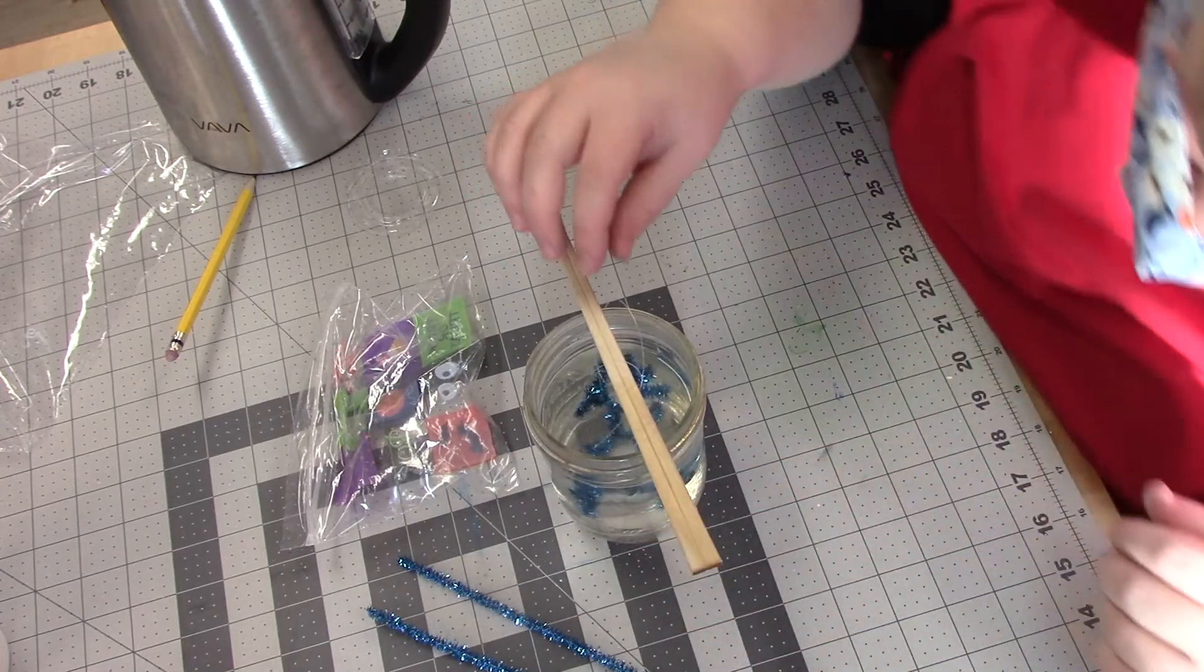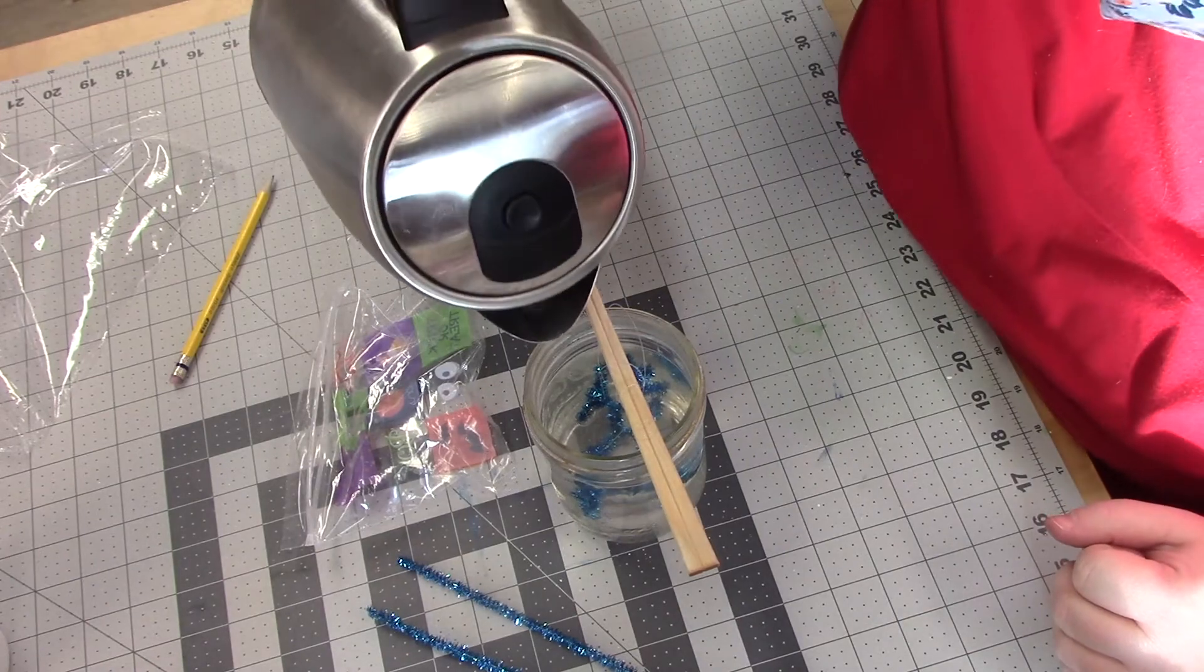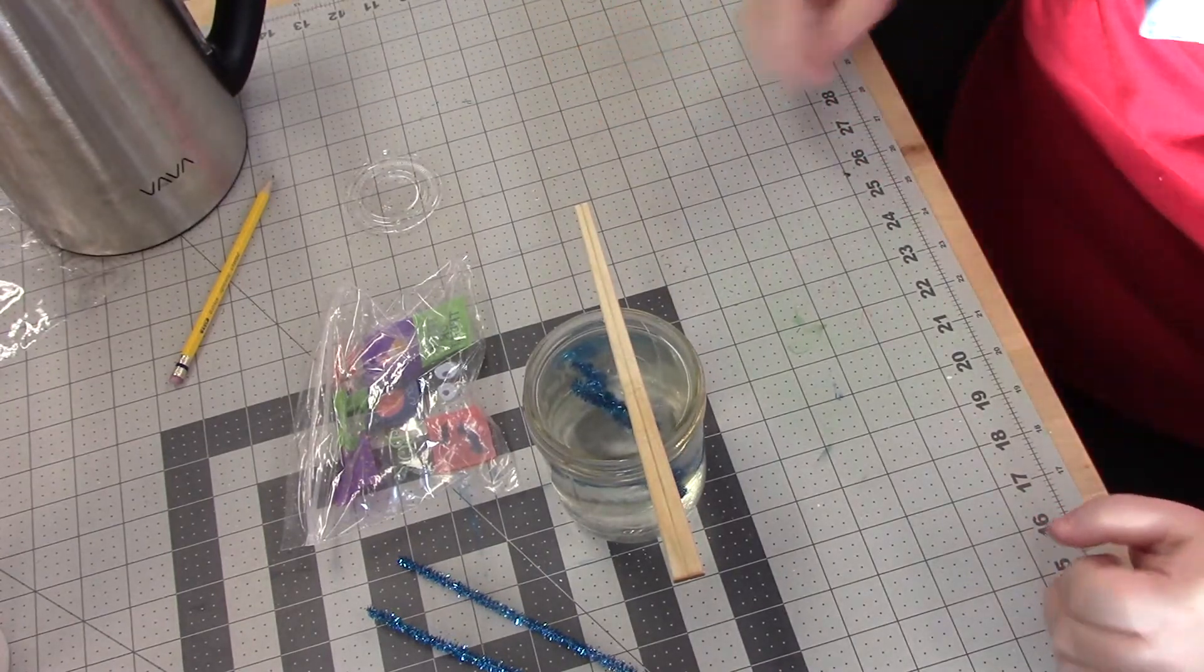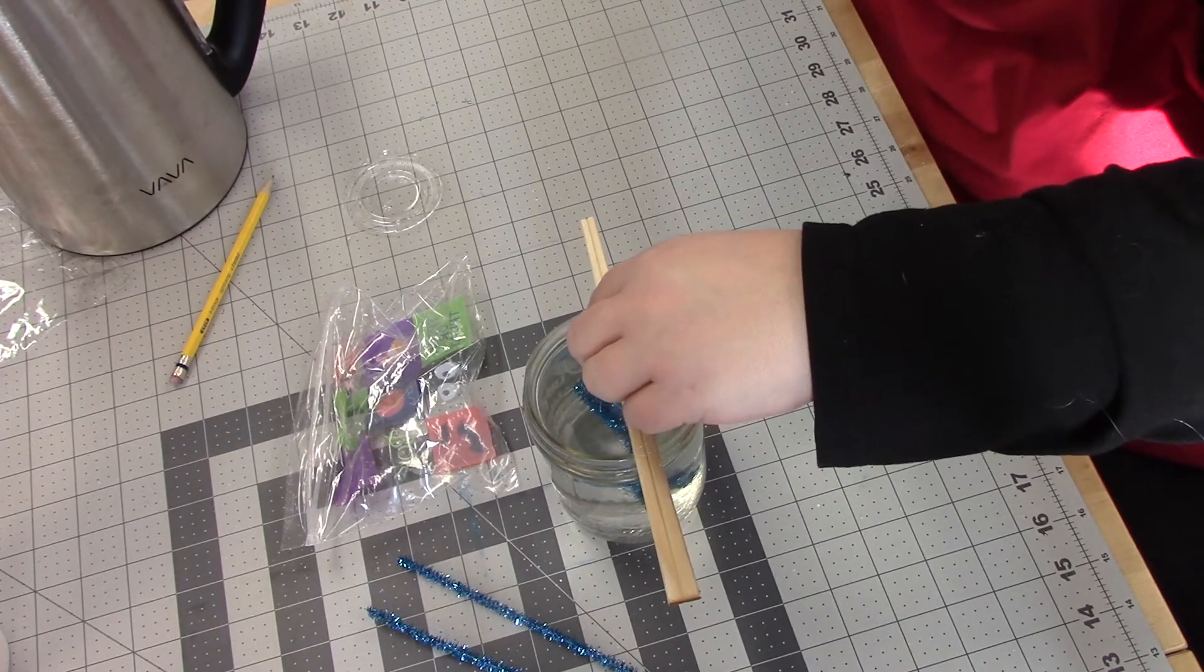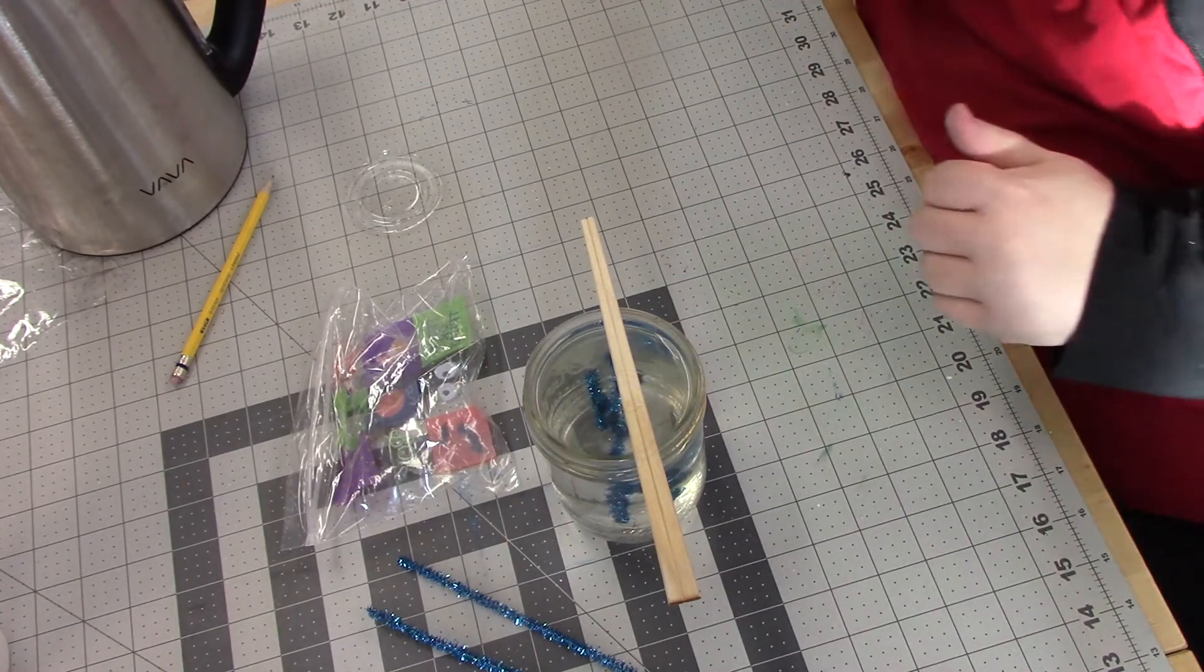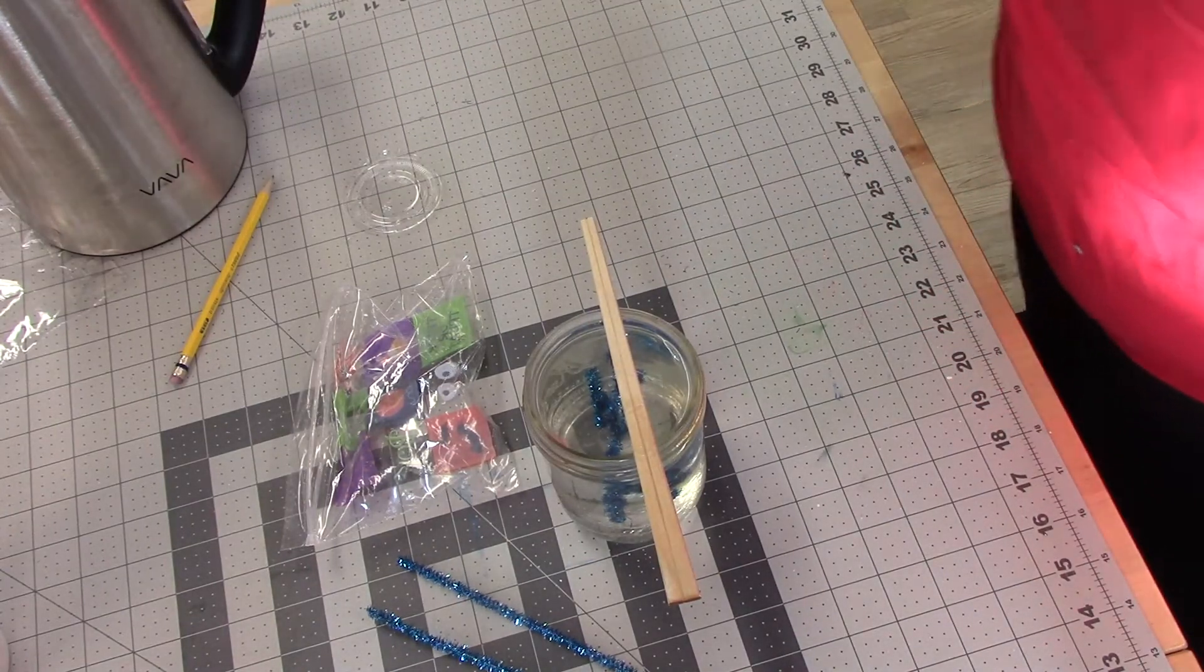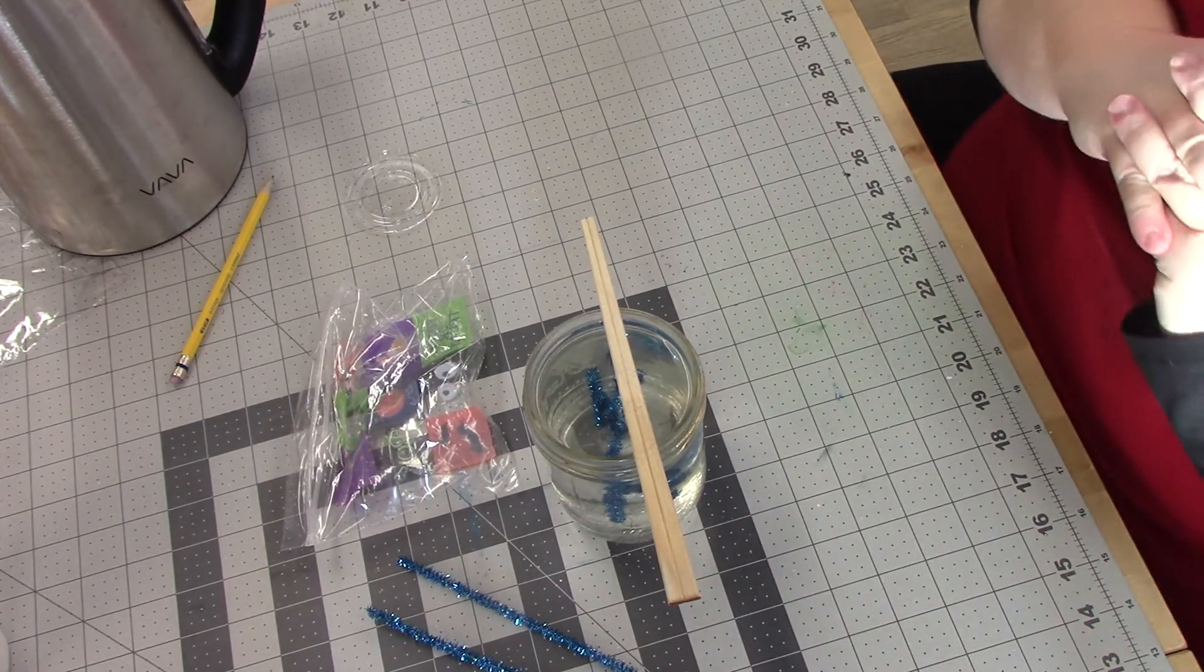There we go. Make sure it's not touching. Looks like we need a little bit more water in here because the top of the snowflake is out. There we go. All right, now the best thing to do if you can is make sure your snowflake is not touching the sides of your jar or the bottom. So right now it looks like it is suspended and it's not touching anything, which is exactly what we want.